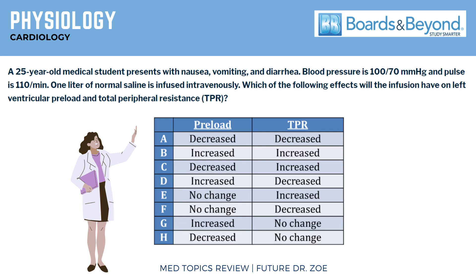Next, physiology. A 25-year-old medical student presents with nausea, vomiting, and diarrhea. Blood pressure is 100 over 70 and pulse is 110 per minute. One liter of normal saline is infused intravenously. Which of the following effects will the infusion have on left ventricle preload and total peripheral resistance, or TPR? A. Decreased preload, decreased TPR. B. Increased, increased. C. Decreased, increased. D. Increased, decreased. E. No change, increased. F. No change, decreased. G. Increased, no change. H. Decreased, no change. The correct answer is D: increased preload, decreased TPR.